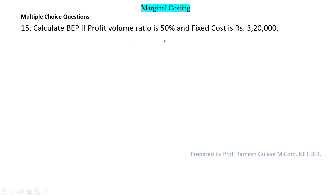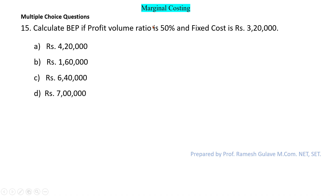The next question asks to calculate the break-even point if the PV ratio is 50% and fixed cost is ₹3,20,000. When PV ratio is given, the formula is: BEP equals fixed cost divided by PV ratio. So BEP equals ₹3,20,000 divided by 50%, which equals ₹6,40,000. Option C — ₹6,40,000 — is the right answer.